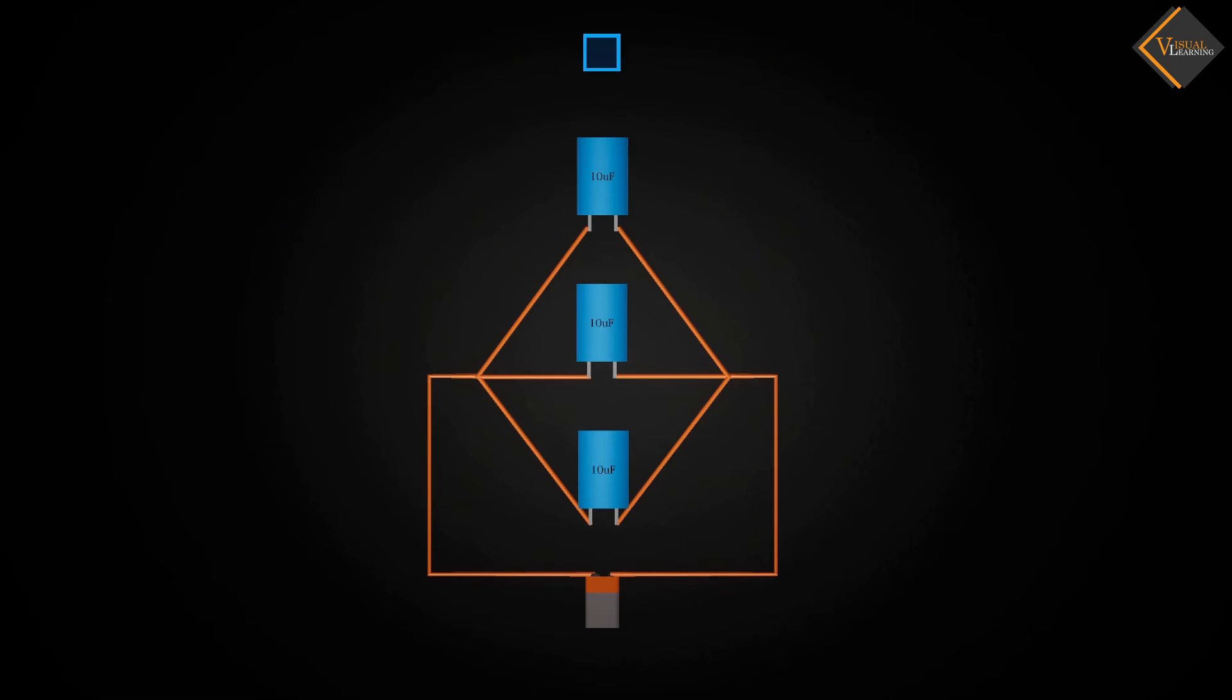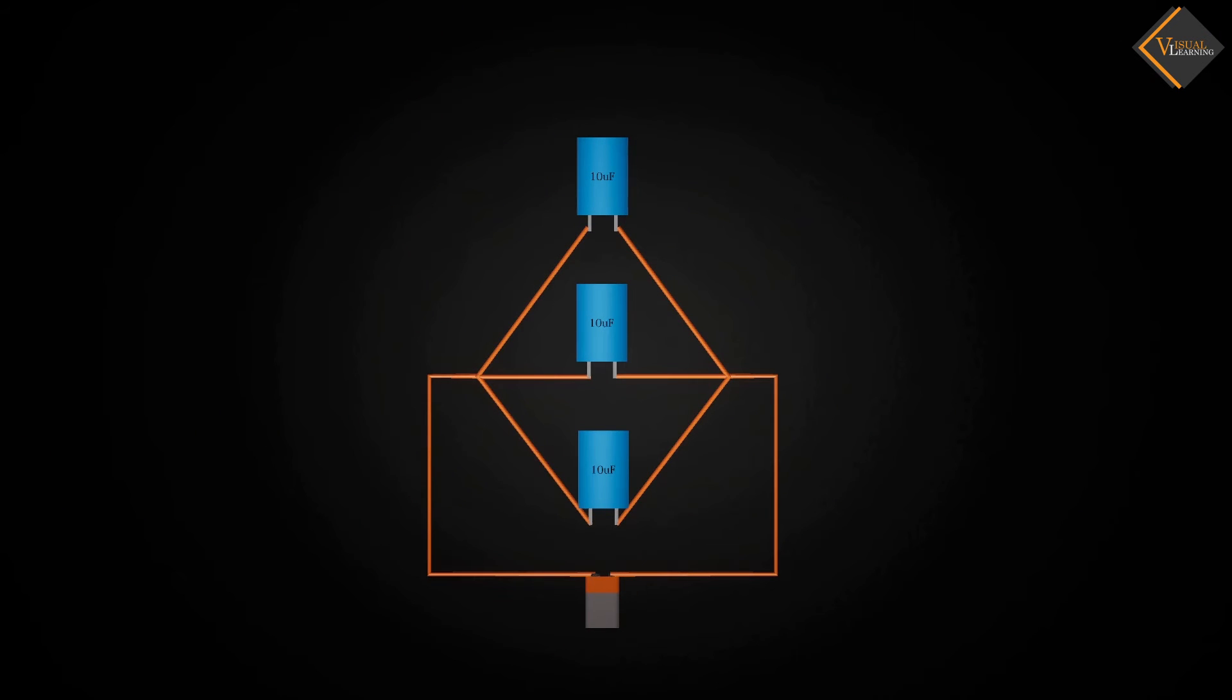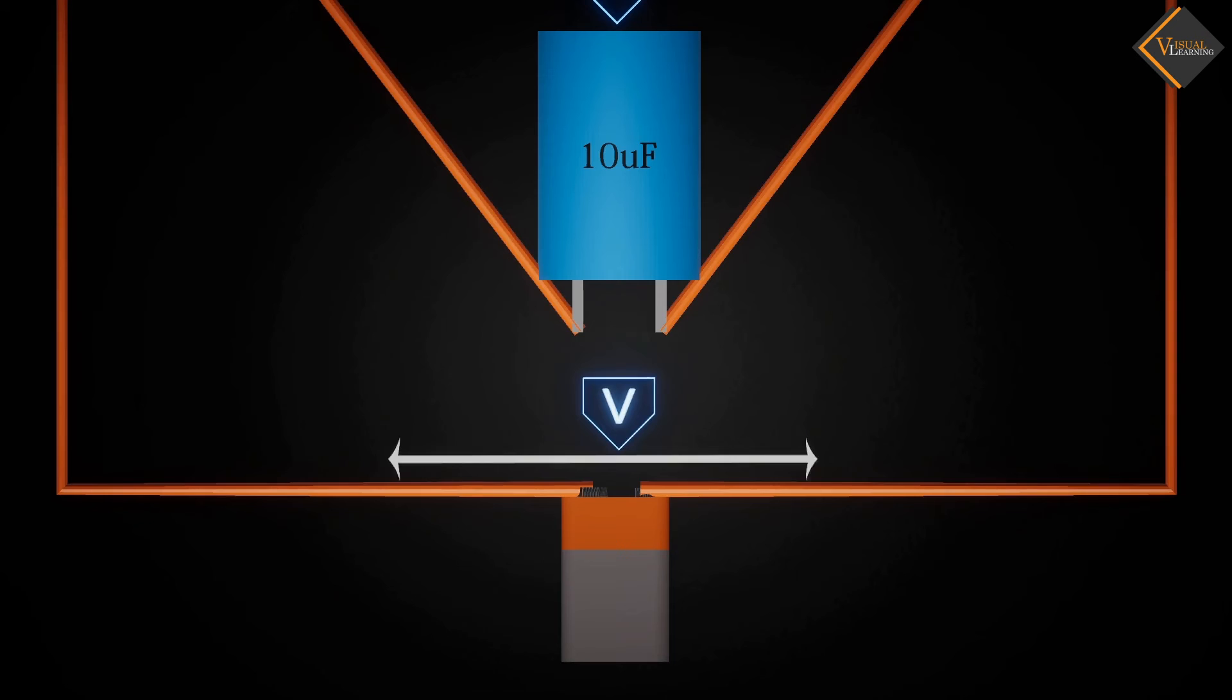In the animation, we see three capacitors connected in parallel to the battery. The capacitance of these three capacitors is denoted as C1, C2 and C3 and the potential applied to them is denoted as V.